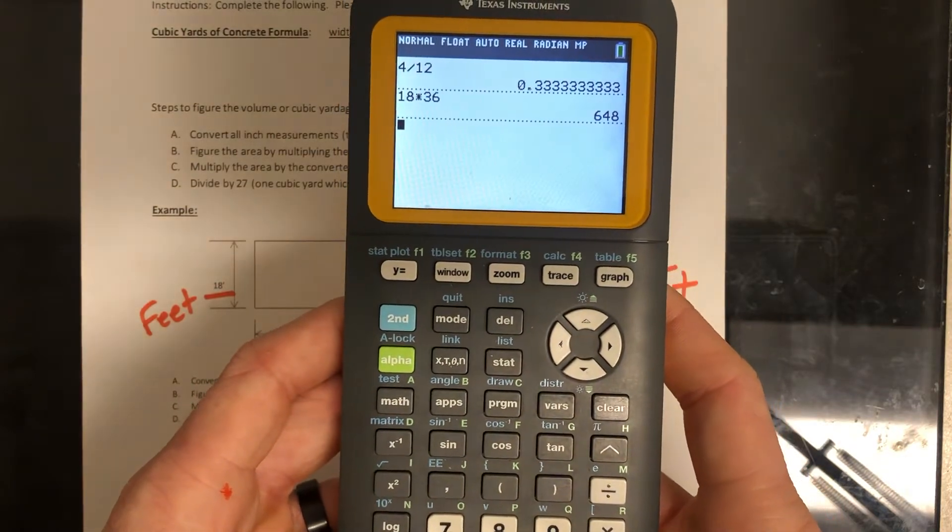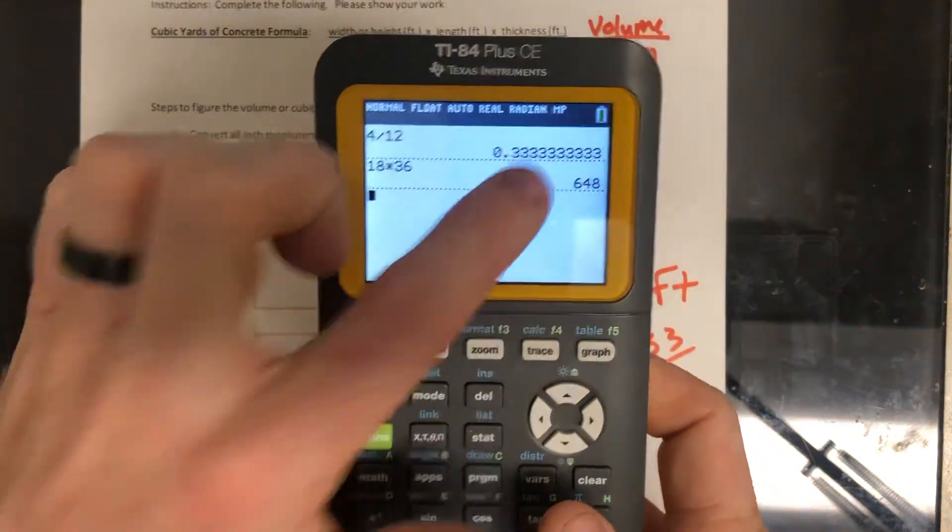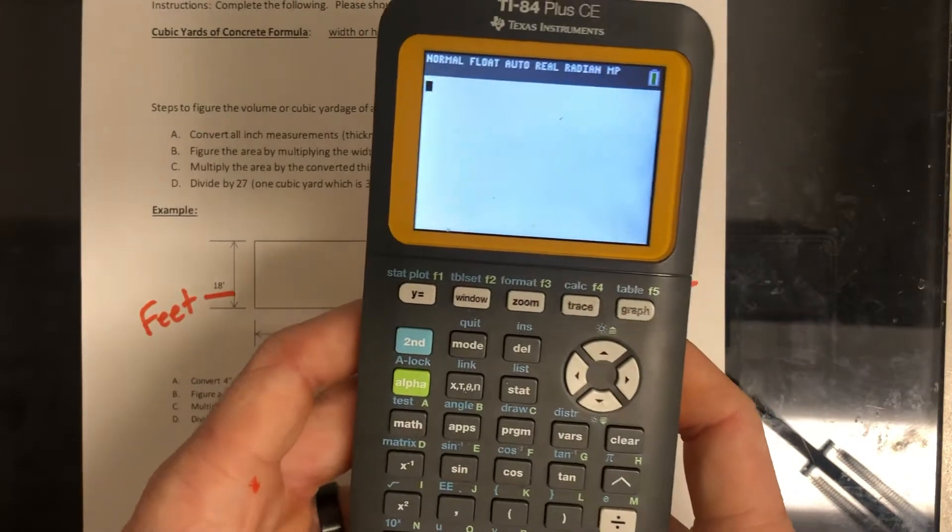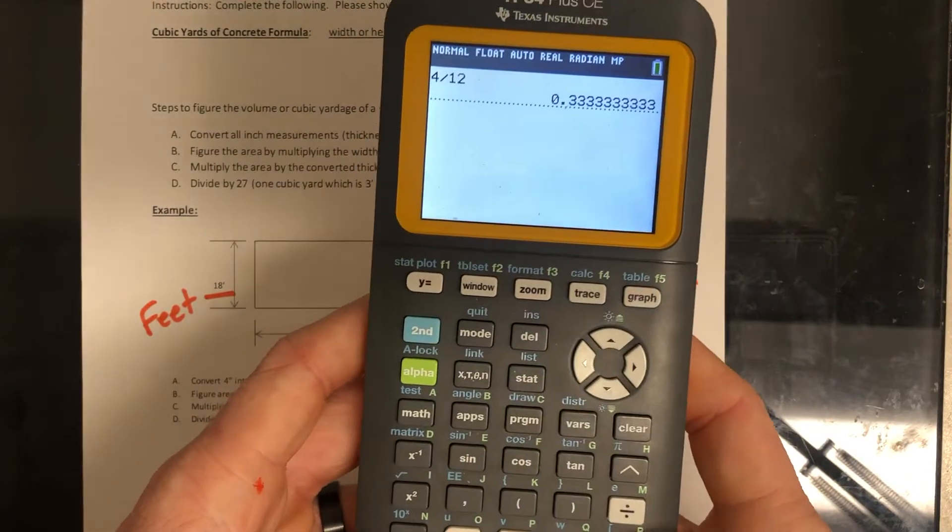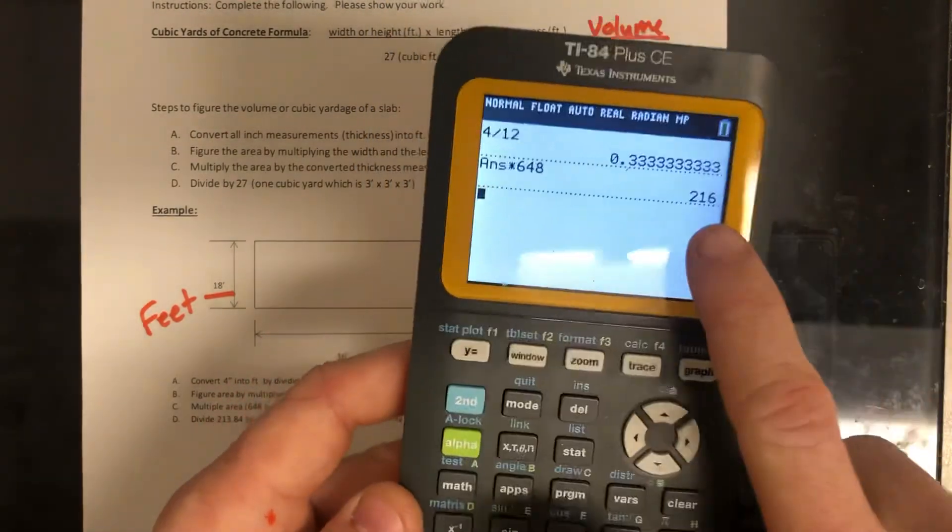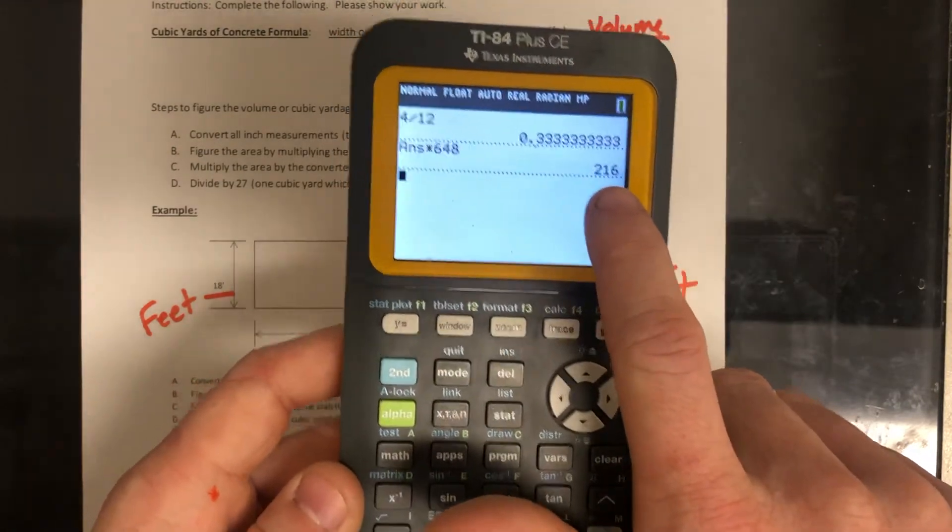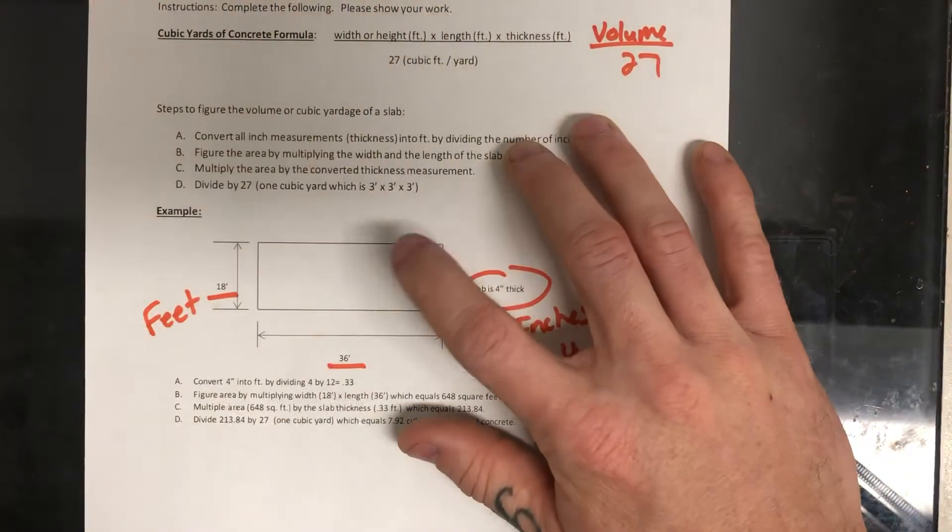So we're going to do, now we're going to multiply those two. All right, so four divided by 12 times 648. That's going to be the area or the volume of this particular slab.